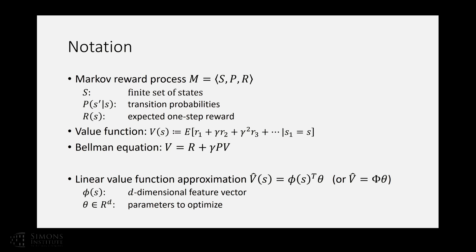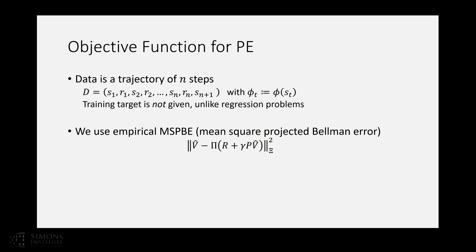In policy evaluation, we are given a trajectory of N steps: first state, first reward, next state, next reward, and so on. Unlike many supervised learning problems such as regression, there is no target label here because we only observe intermediate one-step rewards, but what we try to estimate is the long-term reward. Usually, what people do in reinforcement learning is to use other kinds of objectives.